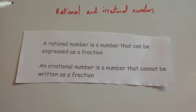In this video, we're going to look at rational and irrational numbers. A rational number is a number that can be expressed as a fraction, a over b. An irrational number is a number that cannot be written as a fraction.